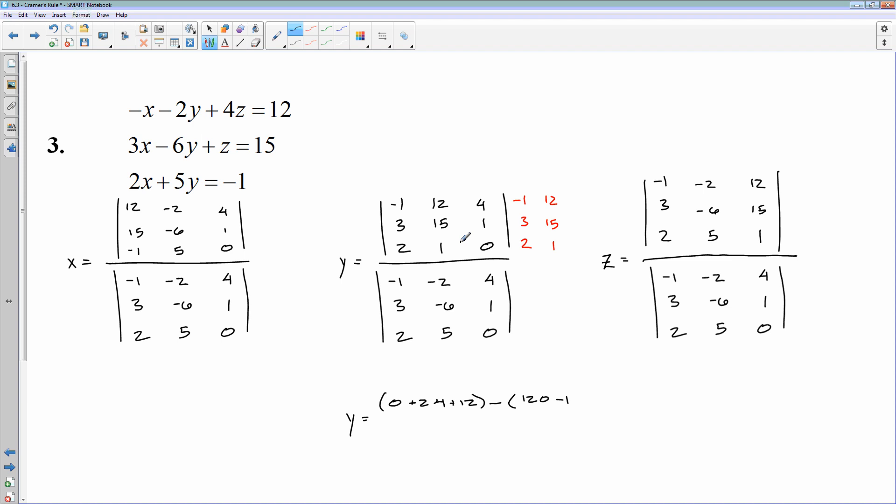In my denominator, again, I'm going to copy those first two columns, negative 1, 3, 2, negative 2, negative 6, and 5. And the good thing is once you get that first denominator, you have the other two as well. I'll multiply that, negative 1 times negative 6 times 0, negative 2 times 1 times negative 2 is negative 4, 4 times 3 is 12, times 5 is 60, minus, and then we'll multiply uphill, 2 times negative 6 is negative 12, times 4 is negative 48, plus 5 times 1 times negative 1 will be negative 5, and then 0. And then we'll do the arithmetic to clean that up.